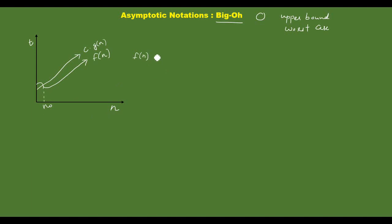f of n is less than or equal to c into g of n. This relationship is satisfied for all n greater than or equal to n-naught. This is for asymptotic analysis for large inputs.